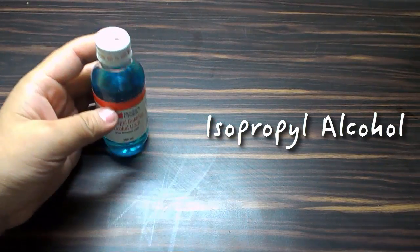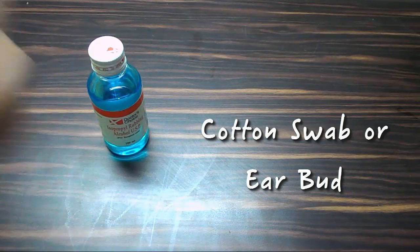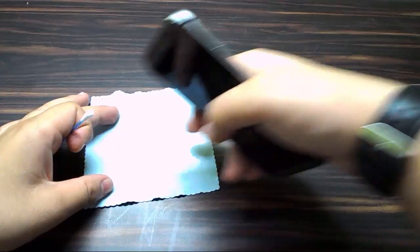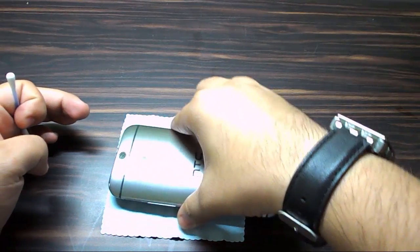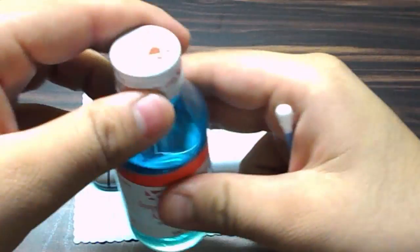Then you need a cotton swab or earbud as you might call it. So first, secure your M8 on a flat surface, keep it like that. Okay, then take the isopropyl alcohol.